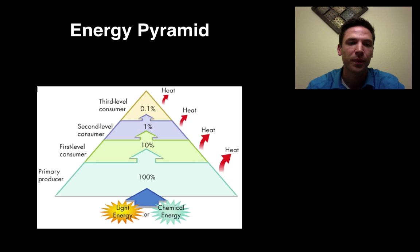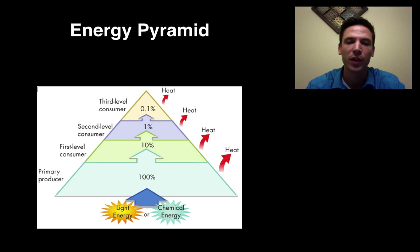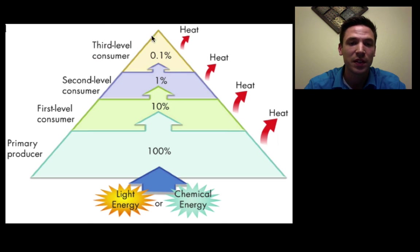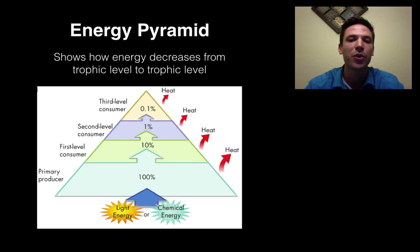We can show this using a graphic called an energy pyramid. An energy pyramid is a picture that shows how energy decreases as we move from organism to organism. Starting at the base with our primary producers — our first trophic level — we start with 100% of the energy through photosynthesis or chemosynthesis. As we move up to first-level consumers, then second-level, then third, we're only getting 10% each time. By the time we get to the top, we're only left with 0.1% of the original energy, and the rest is given off as heat.